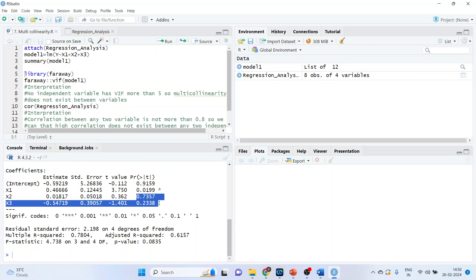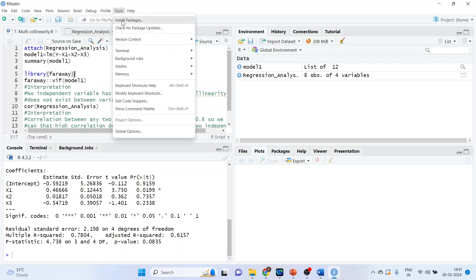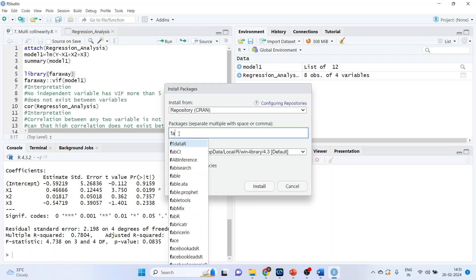Now we want to check is there any presence of multicollinearity or not. For this we require a package which is called car. The name of the package is car. Tools, install packages. We will have to load this package. Make sure your internet connection is on. Car, press install.